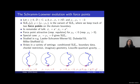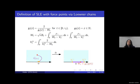SLE kappa rho arises in a large number of settings. For example, one way to get SLE kappa rho is to start with a regular SLE and condition it on certain natural events. The setting most relevant for this talk is Liouville quantum gravity, where SLE kappa rho arises when one does conformal welding of LQG surfaces. SLE with force points can also be defined via Löwner chains: we solve the Löwner differential equation, but instead of the driving function W being a constant multiple of Brownian motion, we add drift terms that vary in time and depend on the location of the marked points.